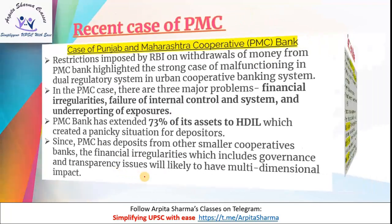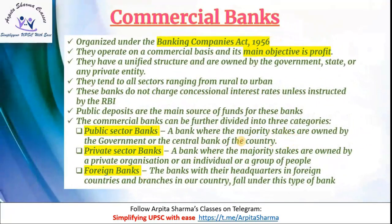Commercial banks are organized under the Banking Companies Act 1956. They operate on a commercial basis and their main objective is profit. They tend to operate in all sectors, ranging from rural to urban, and do not charge concessional interest rates because their basic objective is profit. Commercial banks can be divided into three categories: public sector banks, private sector banks, and foreign banks.